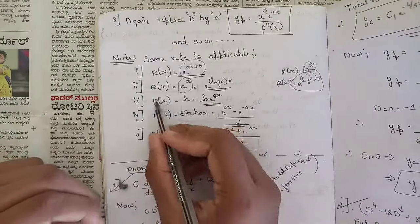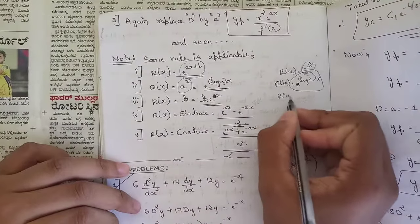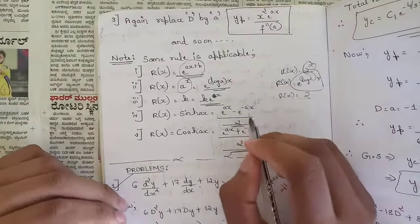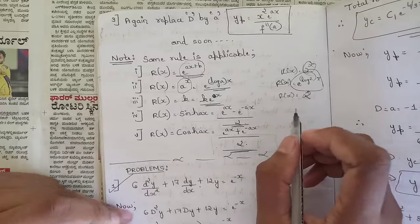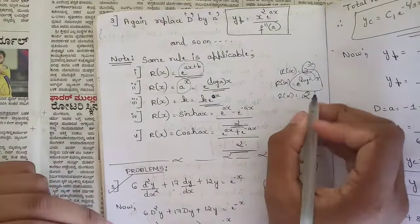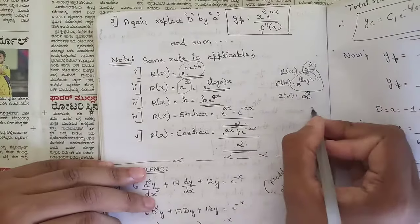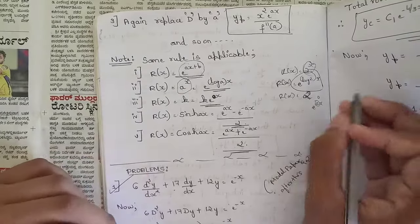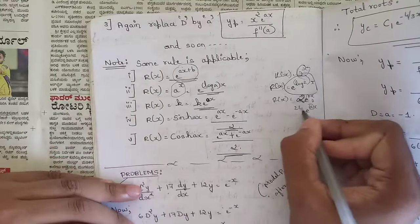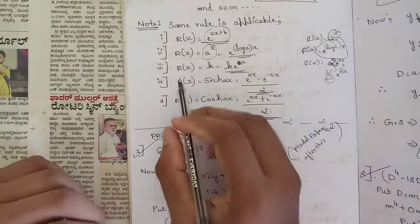Another note: if r(x) = k, a constant (say r(x) = 2), the value of a is not explicitly given. We remember that in e^(ax), the value of a is 0 when we have a constant. So we write 2 = 2·e^(0·x), and since e^0 = 1, this equals 2. The same rules with a = 0 apply.